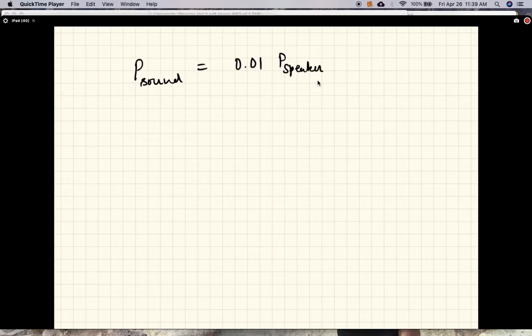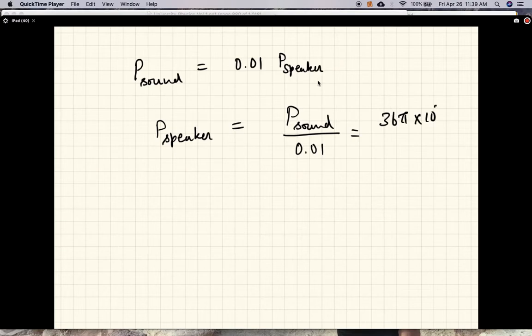That is the electrical energy put into the speaker per second. So power of the speaker: 36π times 10⁻⁷ watts divided by 0.01, which is 10⁻². So this is 36π times 10⁻⁵ watts. And this is equal to 1.13 times 10⁻³ watts.